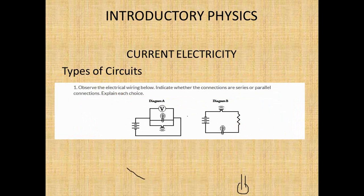Let's look at a few questions. The task is to observe the electrical wiring and indicate whether the connections are series or parallel, and explain your choice. Looking at the first one: there is branching — one branch here with a lamp and one branch with another electrical device. This looks like a parallel circuit because there are branching points. The second one has three electrical devices — a resistor, a lamp — but there is one pathway with no branching, so this is a series circuit.